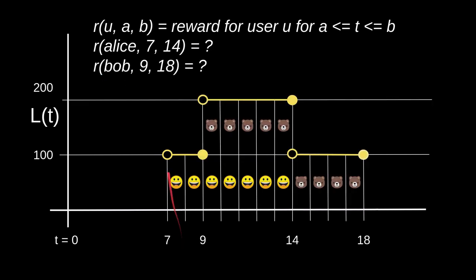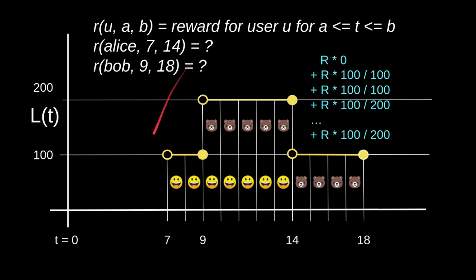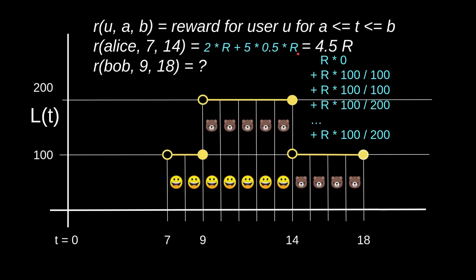Now let's try a more complicated example computing rewards for both Alice and Bob. Alice stakes 100 tokens at T equals 7, Bob stakes 100 tokens at T equals 9, Alice unstakes at T equals 14, and Bob unstakes at T equals 18. For Alice: she gets 0 at T equals 7. At T equals 8, there are 100 tokens total and she has 100 staked, so she receives R times 100 over 100. The same applies at T equals 9. From T equals 10 onward there are 200 tokens total, so she receives R times 100 divided by 200. This continues until T equals 14. Doing the math: 2R plus 5 times 0.5R equals 4.5R.